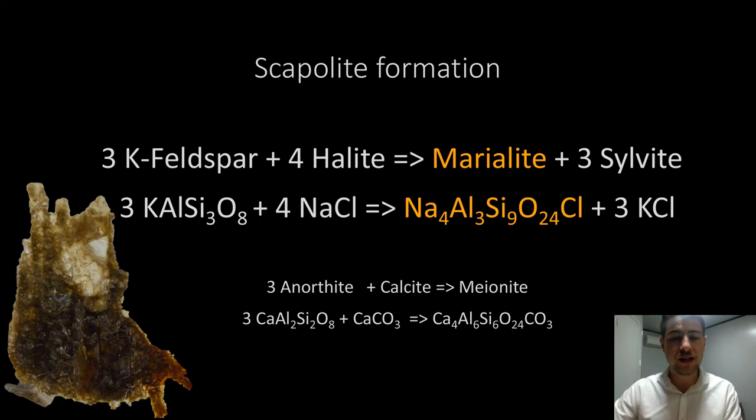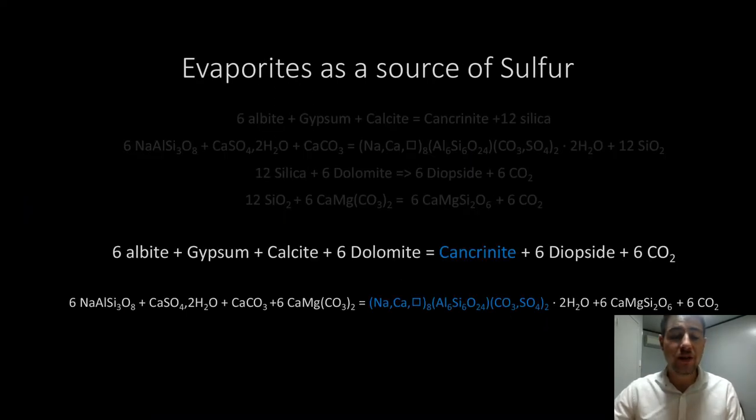For the scapolite, it's actually even easier. Just have some potassic feldspathoid to start with, some halite, and here you go, you've got the marialite, which is the sodic pole of the scapolite. So the evaporites are the source of sulfur, and that's how you can create all those sulfate-bearing minerals, like the cancrinite that we've got too.